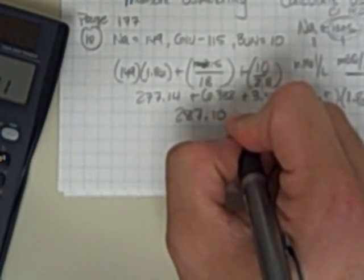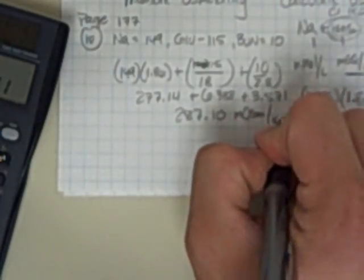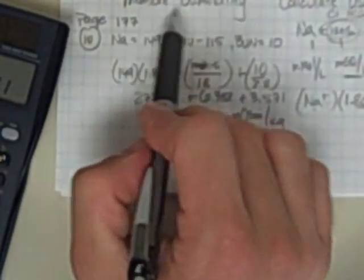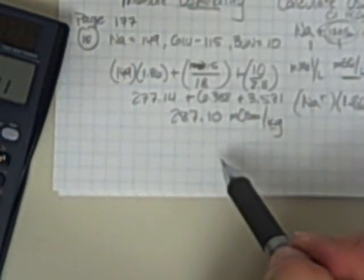So I add these all up together and I get a value of 287.10. If I needed units on that, I could go ahead and call it milliosmoles per kilogram, because that is the unit for osmolality,